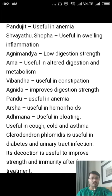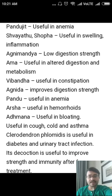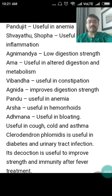Clerodendrum phlomidis, which is Brihat Agni Mantha, is useful in diabetes and urinary tract infections. Its decoction is useful to improve strength and immunity after treatment of Jwara — fever.